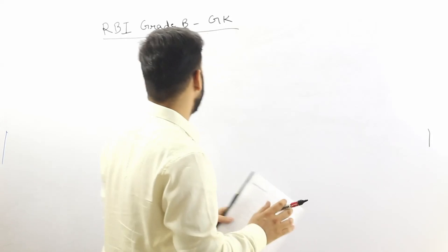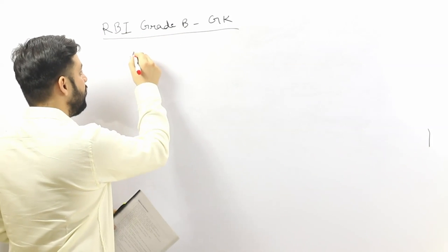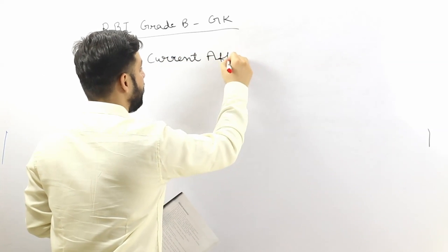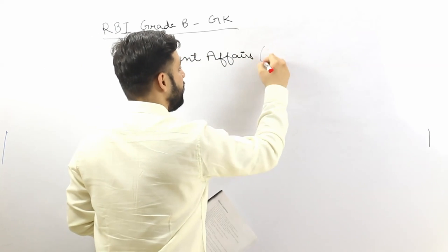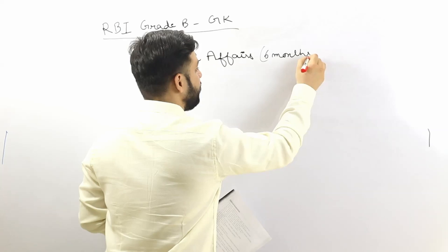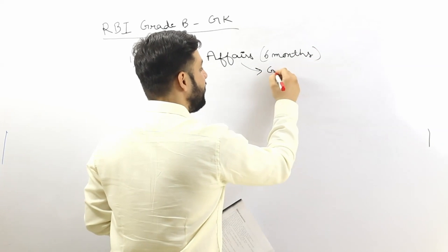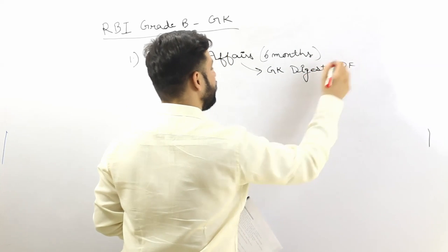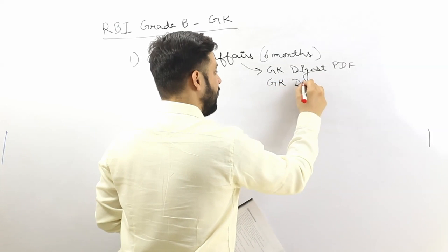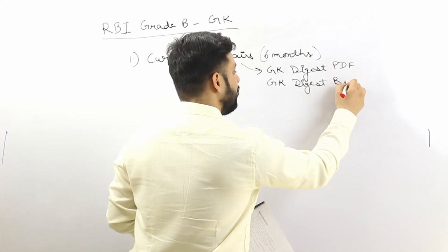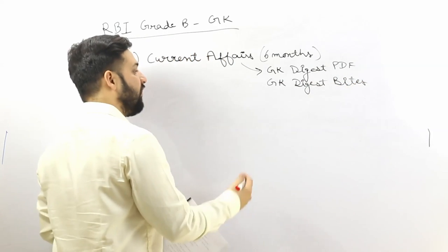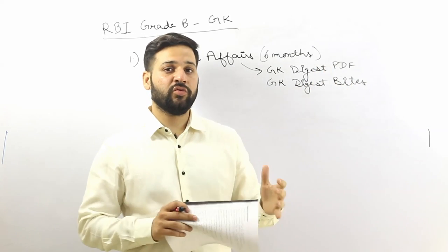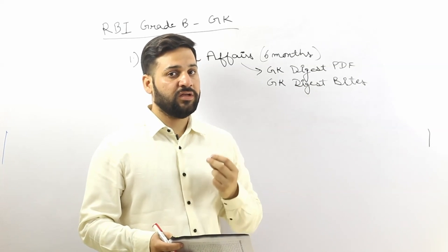Let me tell you the exact syllabus. First of all, you need to read current affairs from the last six months. You can download GK Digest PDFs — we have a GK Digest PDF available. If you want to skim through the whole month's current affairs, you can download GK Digest Bytes. With these resources you can cover six months of current affairs within a day or two.